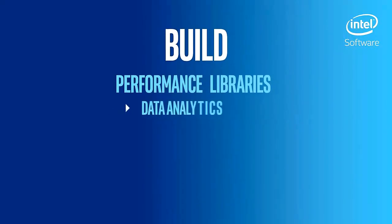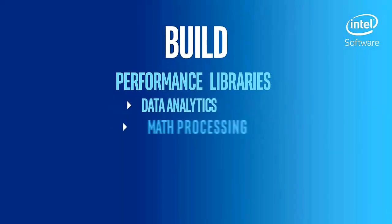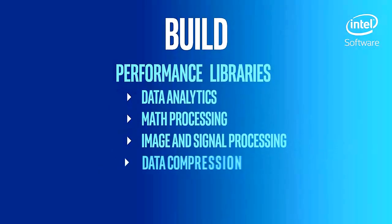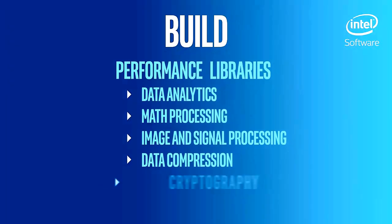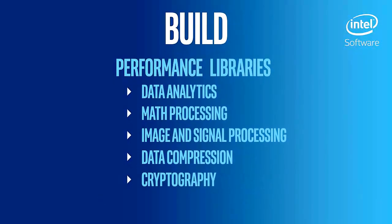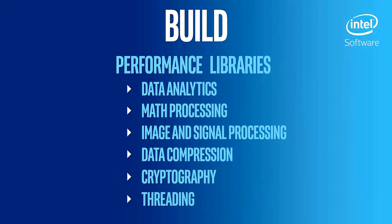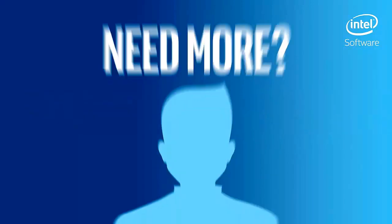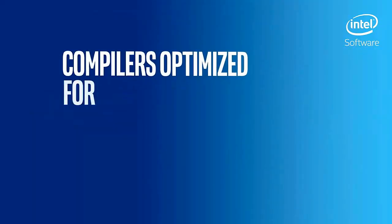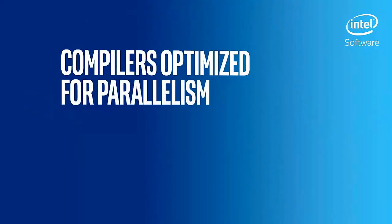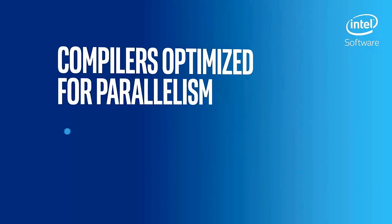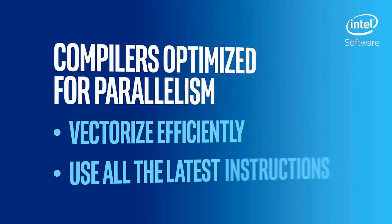Pre-threaded, vectorized, and optimized libraries for data analytics, math processing, image and signal processing, data compression, cryptography, and threading are one of the easiest ways to get faster code. Need more? Intel's C, C++, and Fortran compilers provide vectorization and threading built-in.